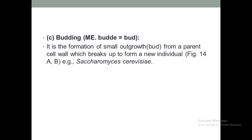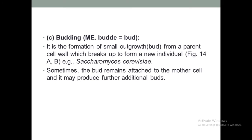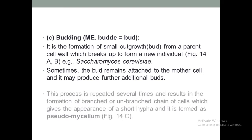Budding is the formation of a small outgrowth called a bud from the parent cell wall, which breaks off to form a new individual. Such type of reproduction occurs in fungi like Saccharomyces cerevisiae. Sometimes the bud remains attached to the mother cell and may produce further additional buds.